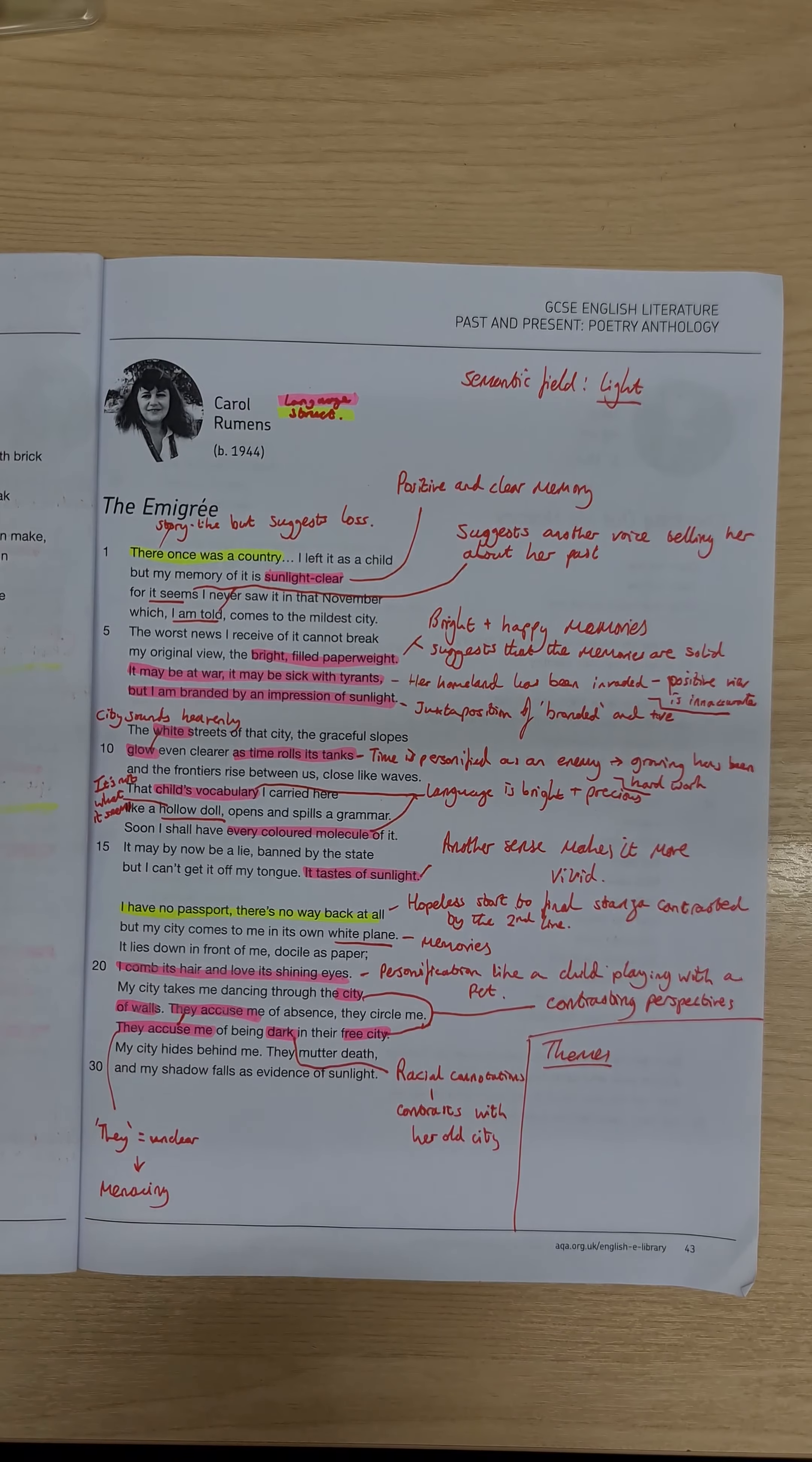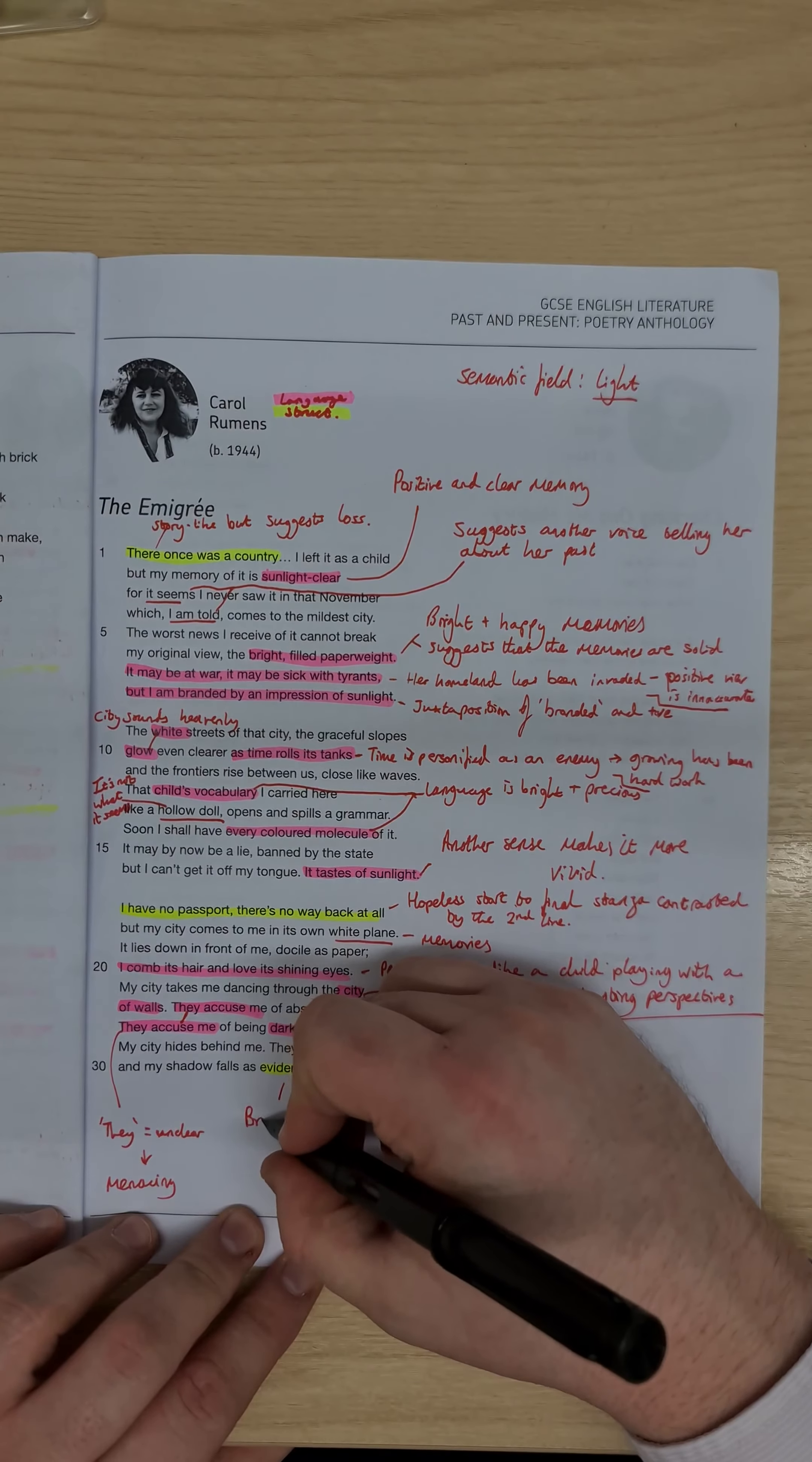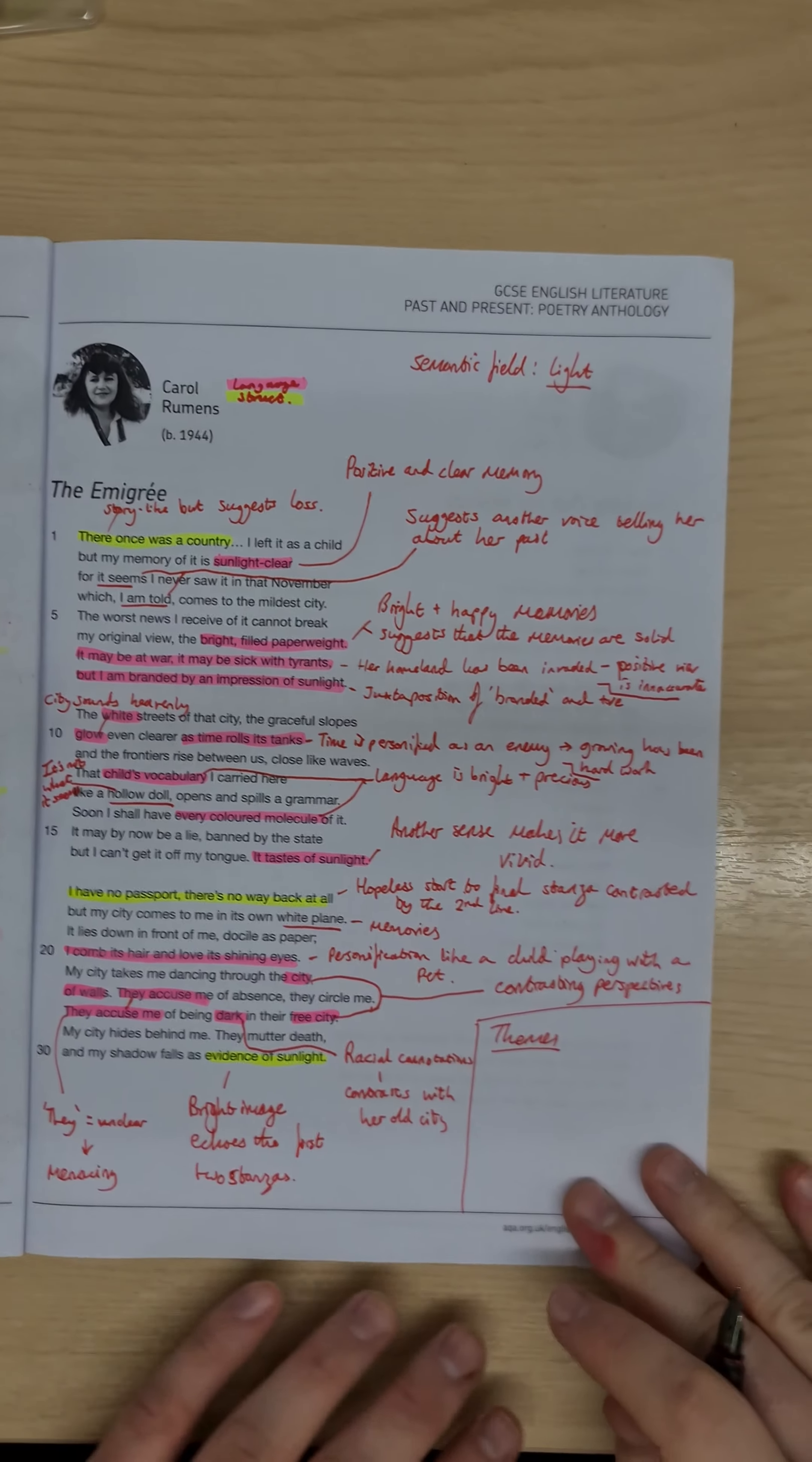and just to finish off the poem then, a really nice sort of echoing, we have this evidence of sunlight, where we have this finishing on a positive note, so despite the threats of death, this new city is still associated with sunlight, just as it is in the first two stanzas, so bright image echoes the first two stanzas, so the themes in this poem, there's two key themes,